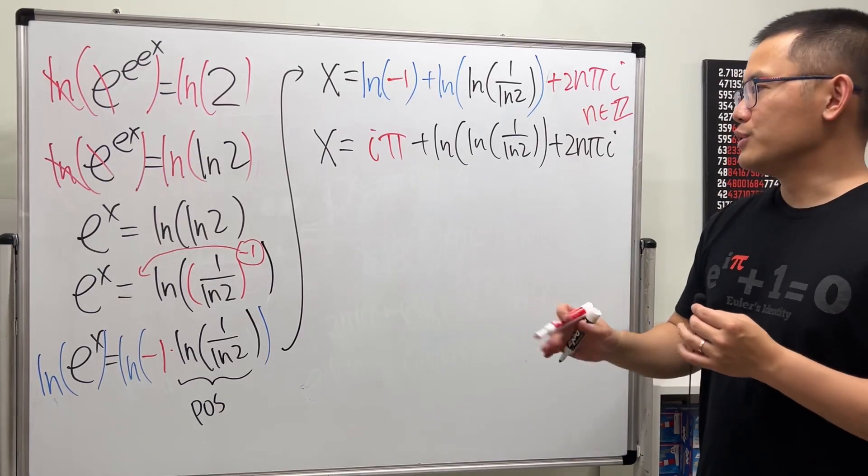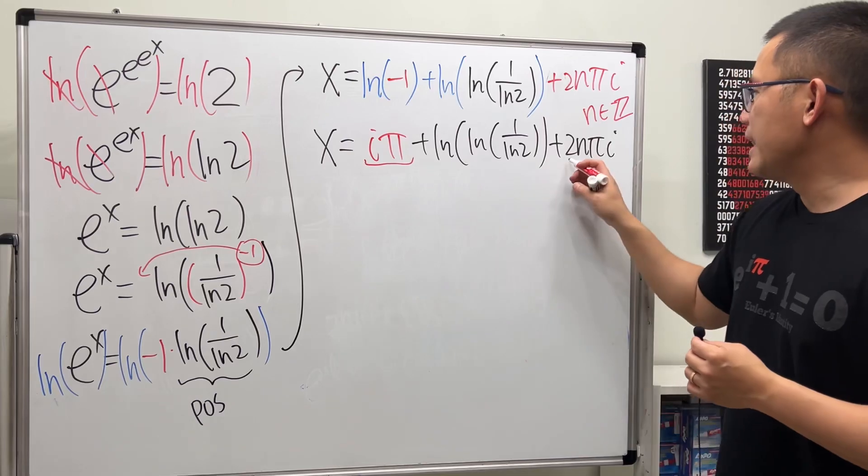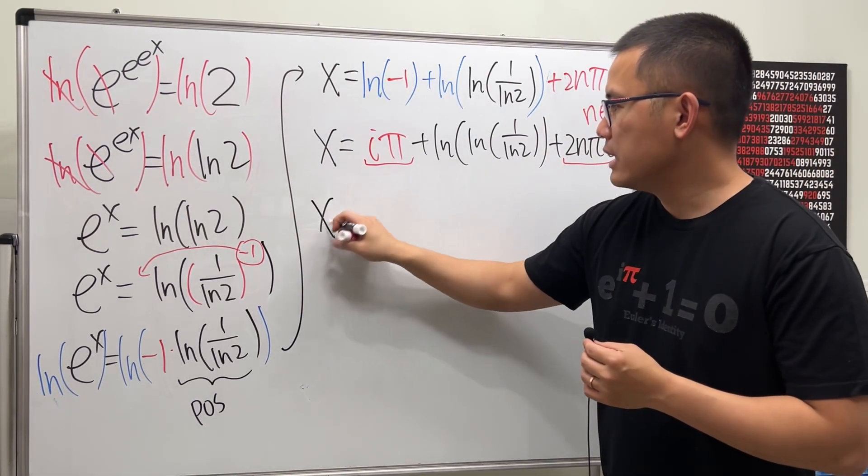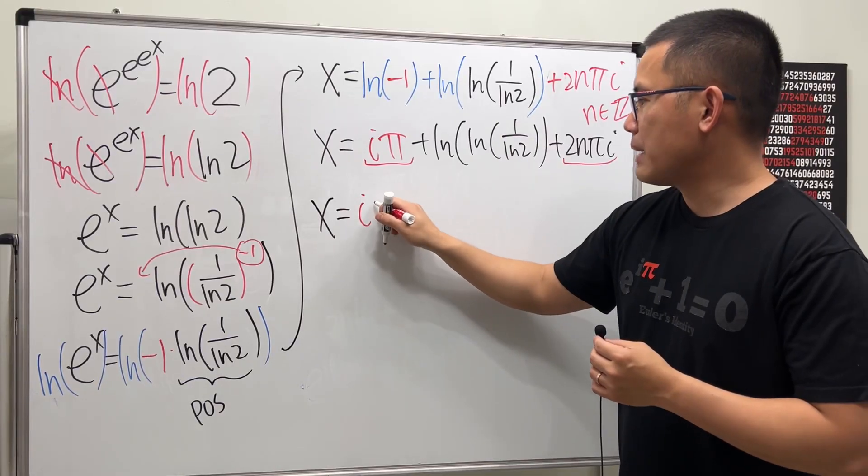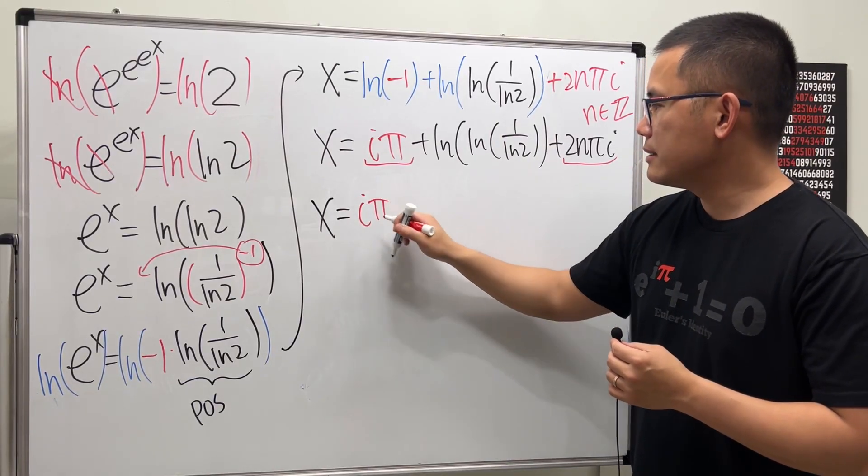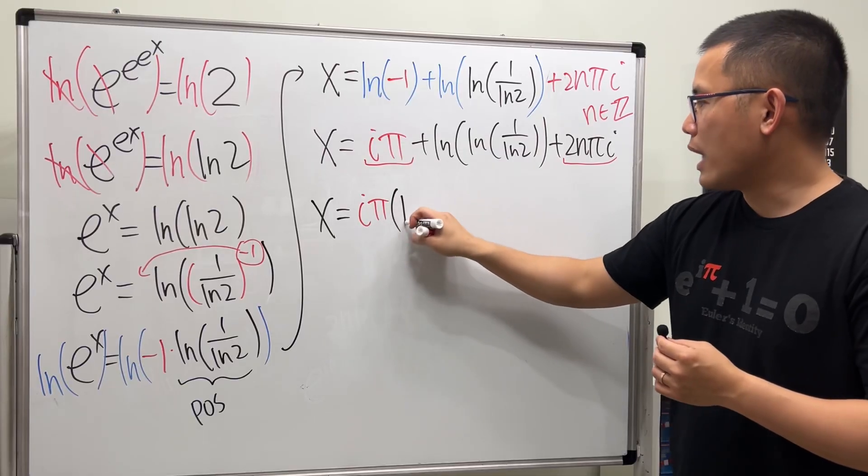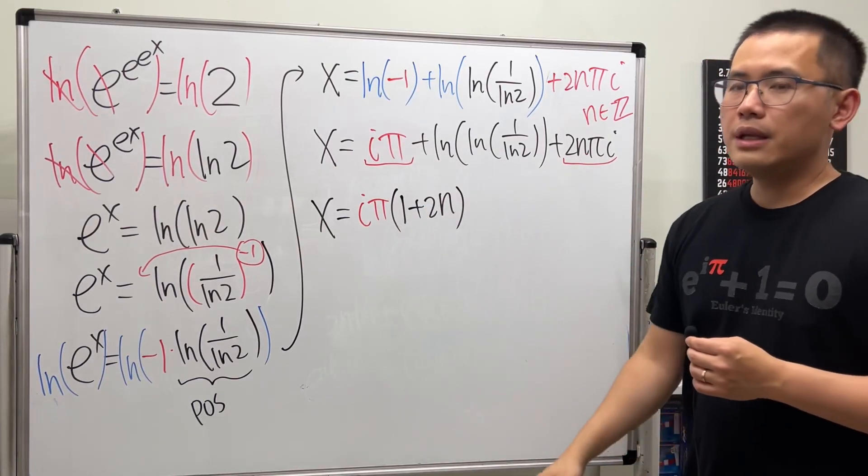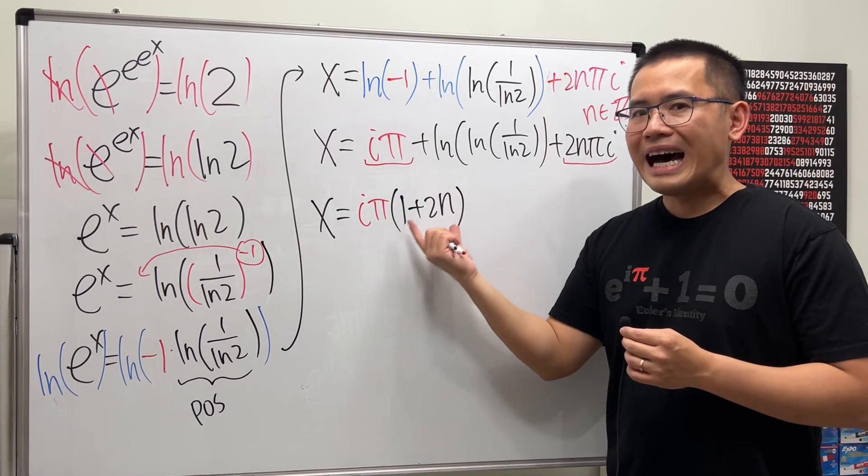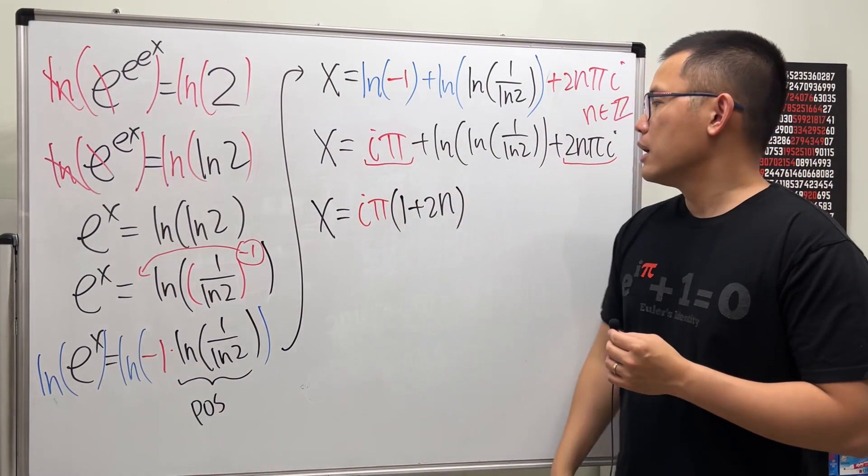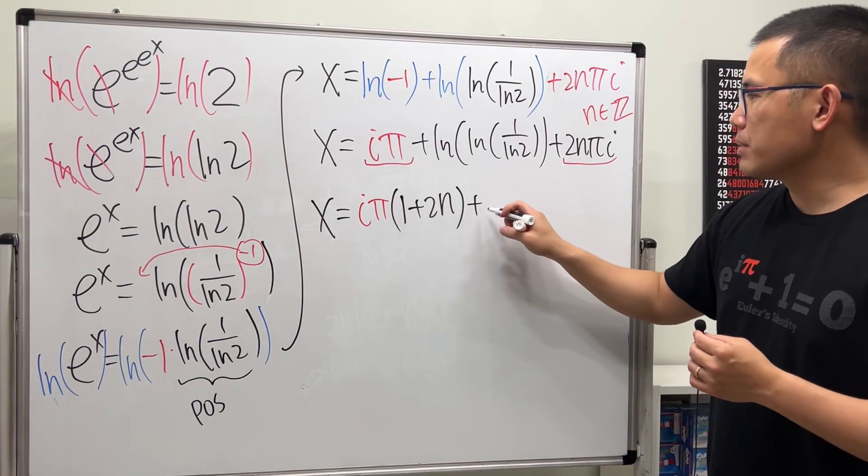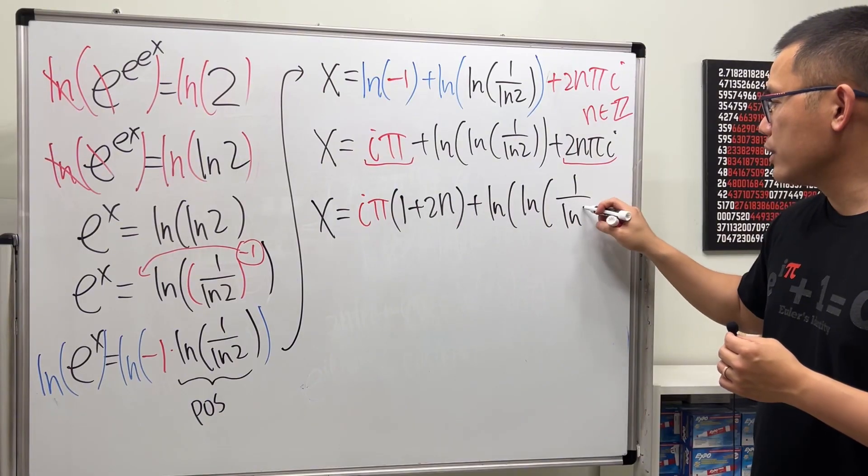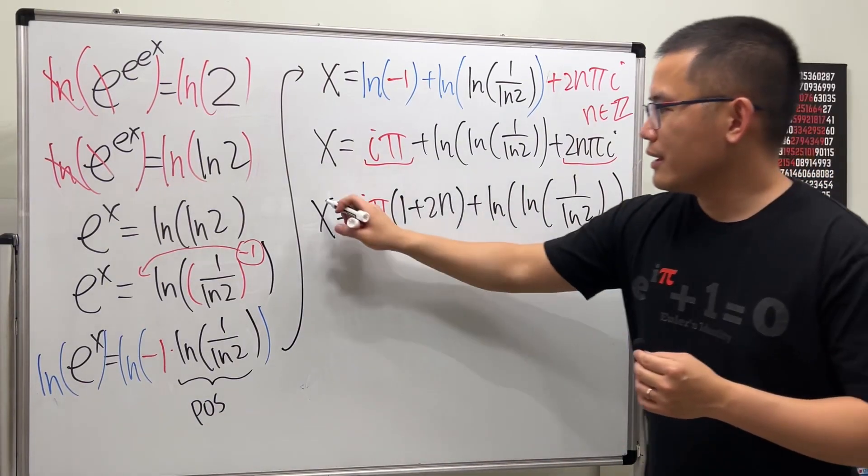So, finally, we can just clean this up a little bit because this and that we can factor out the πi together. So, x is equal to, let's factor out the π and then the πi. And then this will give us 1 and this will give us plus 2n. So, in fact, we will just have all the odd multiples of πi. And then right here, we can say that's plus ln of ln of 1 over ln(2). So, that's it. And that's it.